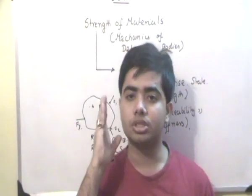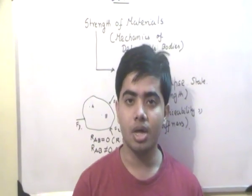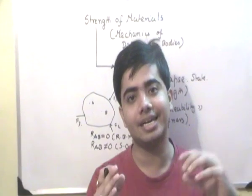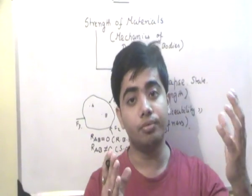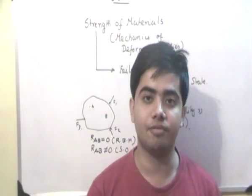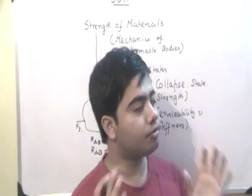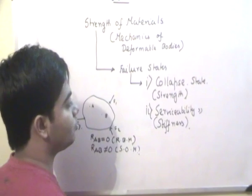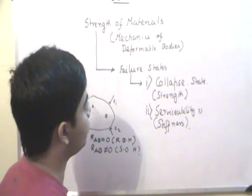So one must as a designer first choose what deformation is going to be allowed, and then you must choose a material that will be taking higher loads, that is, a stiffer material undergoing that deformation. So from these two states we have two strengths: from collapse state we have one strength, from serviceability state we have one strength.